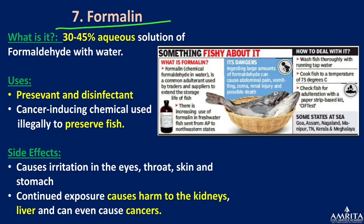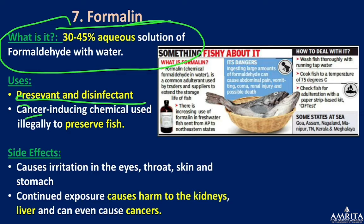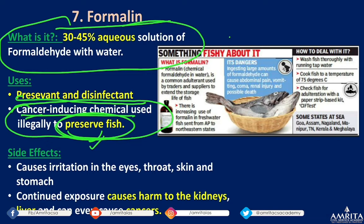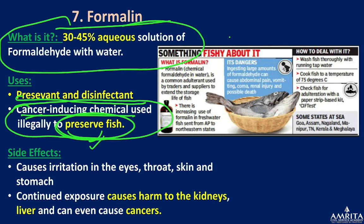Formalin is a chemical compound — a 30 to 40 percent aqueous solution of formaldehyde in water. It is used as a preservative and disinfectant but is a cancer-inducing chemical used illegally to preserve fish. Many countries have banned formalin for fish preservation. Side effects include irritation of the eyes, throat, and skin, and prolonged exposure can harm the kidneys and even cause cancer.